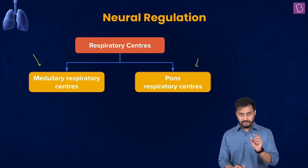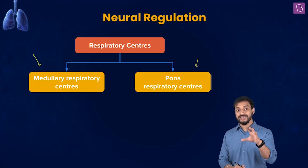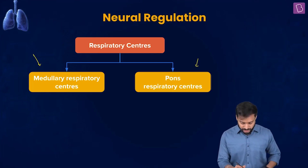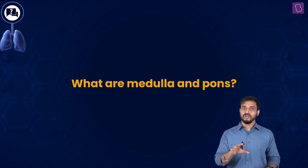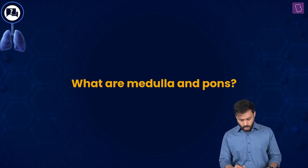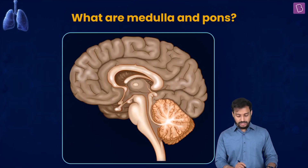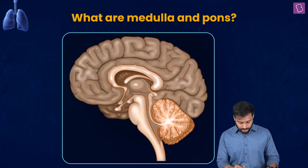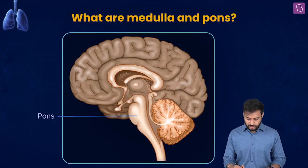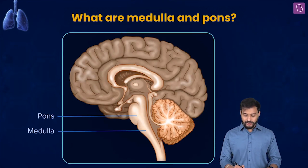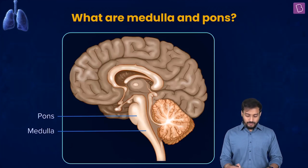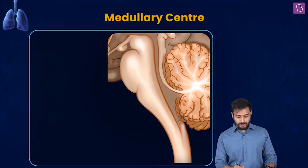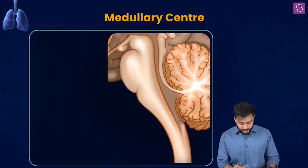I'll be a bit slow here so that you grasp whatever I'm talking about regarding the regulation. The medulla and pons — you'll study about this in upcoming chapters in detail when we talk about the brain. I'll give you a quick glimpse. Let me show you the pons — this portion is the pons, and this is the medulla. Now let me zoom into this picture and show what are the regulations and where is the regulatory center.